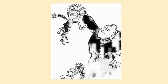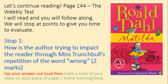Let's take a look at this picture from what we read yesterday. We can see Miss Trunchbull is pulling or holding up Rupert by his hair, and the children in the background look quite shocked and quite scared. We're going to see what happens next in our chapter today. We're on page 144. I will read and you will follow along. We will stop at points to give you time to evaluate.